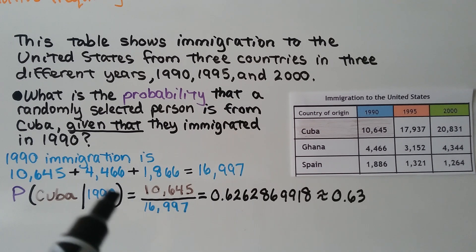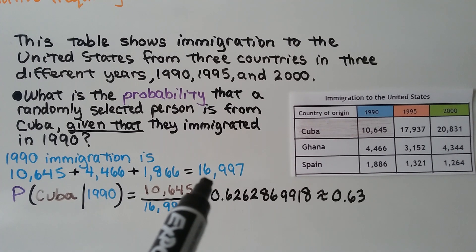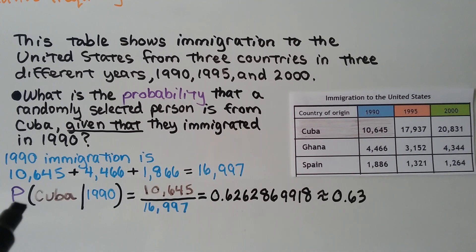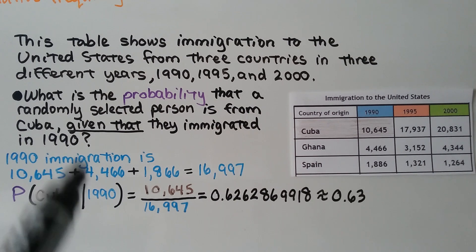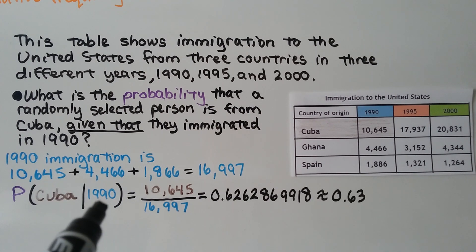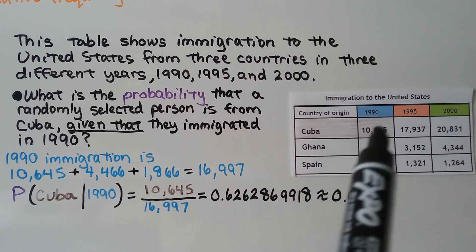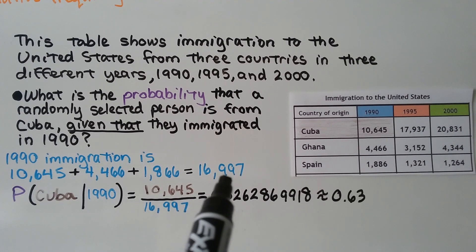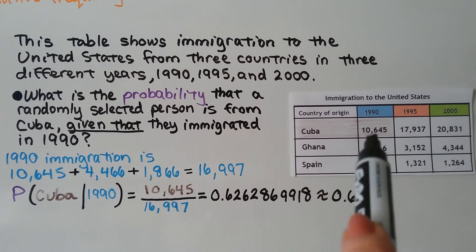First we total up the 1990 immigration — these three numbers — and get 16,997. The probability that the randomly selected person is from Cuba, given it was 1990, uses the bar notation for 'given that.' We write 10,645 for Cuba 1990 over the total 1990 immigration of 16,997. We do our division and get approximately 0.63. The 1990 total became our denominator, and Cuba 1990 became our numerator.